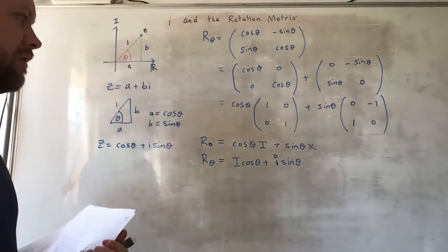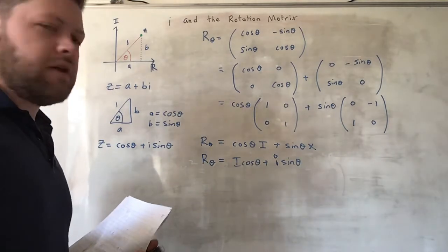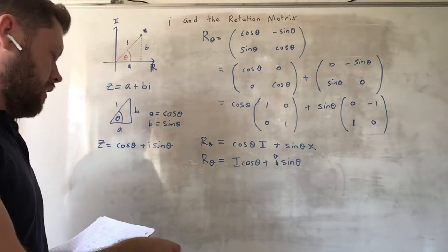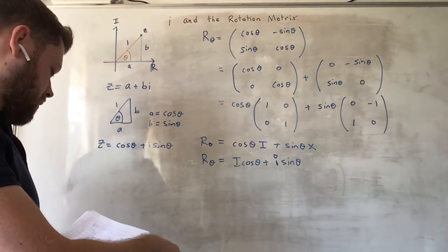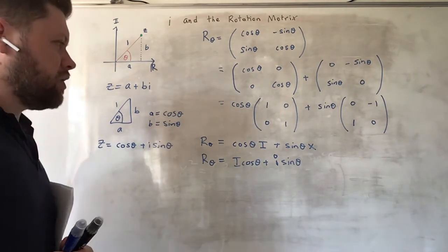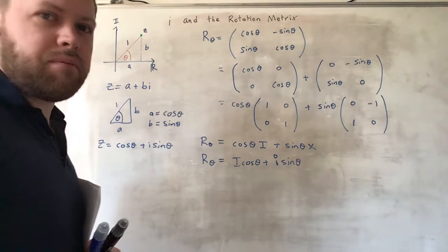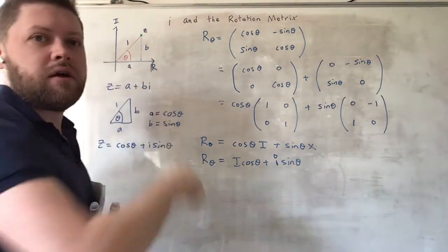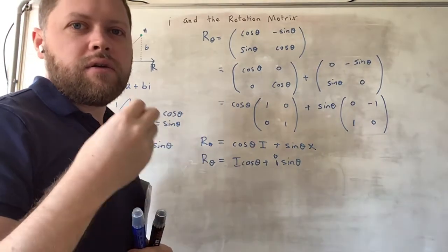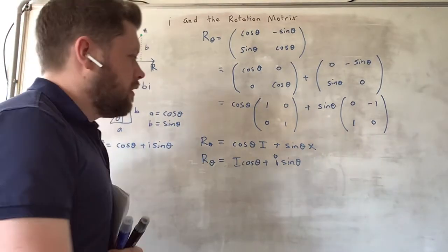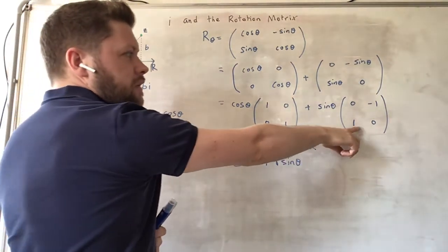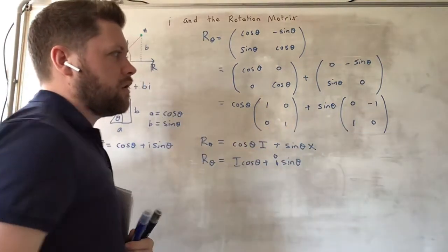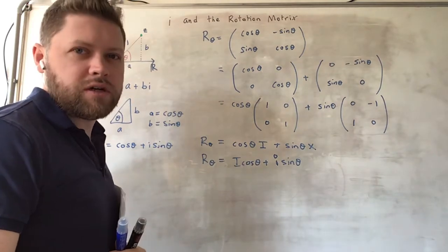So this is complex numbers, basically, in matrix form. Multiplication by i in the complex plane results in a 90 degree rotation. Multiplication by this matrix results in the same. So multiplication by this matrix will give you a 90 degree rotation.